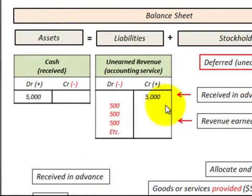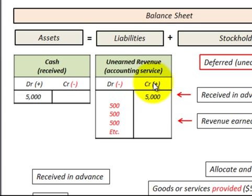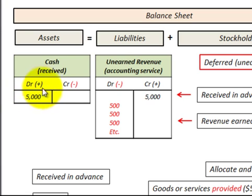So let's look at the journal entry for unearned revenue. We receive the payment in advance of $5,000, so we credit unearned revenue for $5,000, and the corresponding entry would be to debit cash for $5,000. Remember, cash is an asset on the balance sheet.